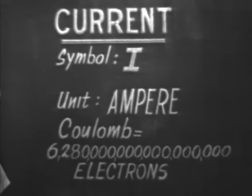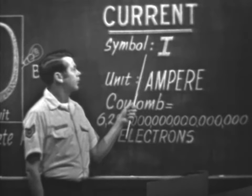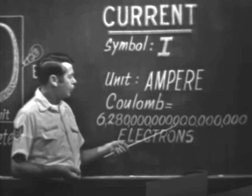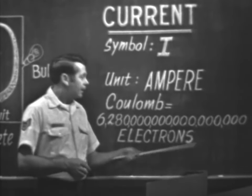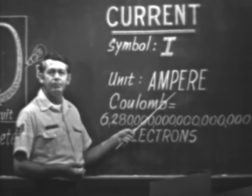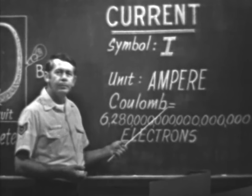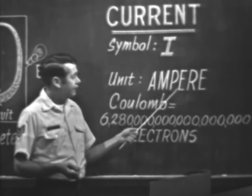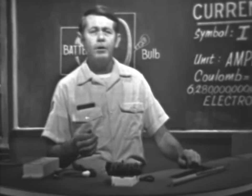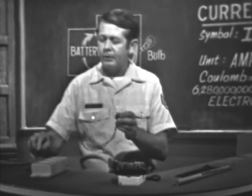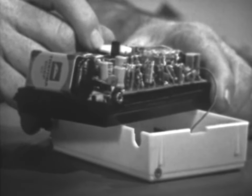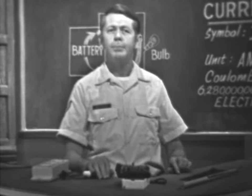Here are some terms associated with current that you should become familiar with. The symbol for current is the capital letter I. A coulomb is a measure of the amount of current — one coulomb is a specific number of electrons. Trying to count this many electrons would be like trying to count the grains of sand on a beach, so we'll rely on meters to measure current in amperes. An ampere is one coulomb flowing past a point for one second, named in honor of the French physicist who discovered this means of measuring current. Current — the movement of electrons — will cause a bulb to give off light, a radio to produce sound, and it's the force that does the work in radar, computers, and communication.